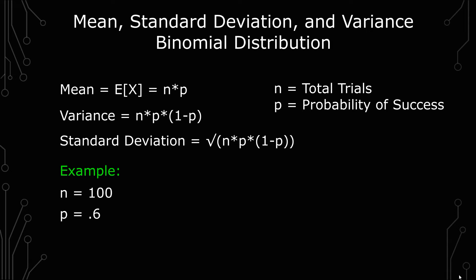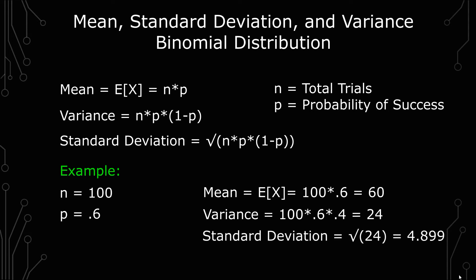The mean or expected value is 100 times 0.6, which gives you 60. The variance is 100 times 0.6 times 0.4, which gives you 24, and the standard deviation equals the square root of 24, which gives you 4.899.